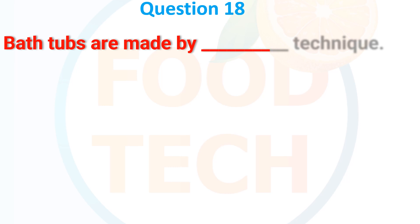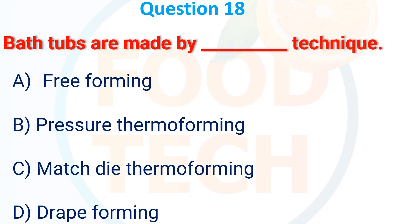Which of the following is not a mold used in thermoforming? (a) Aluminum mold, (b) Steel mold, (c) Wooden mold, (d) Plastic mold. The answer is (b) Steel mold.